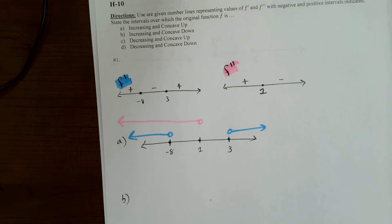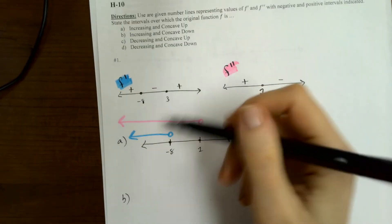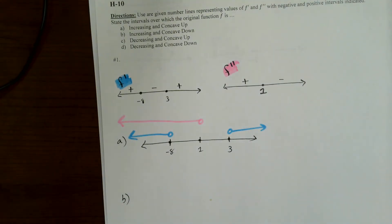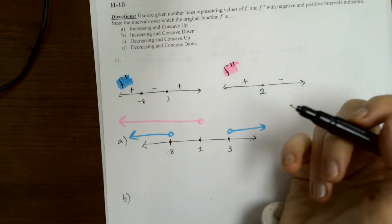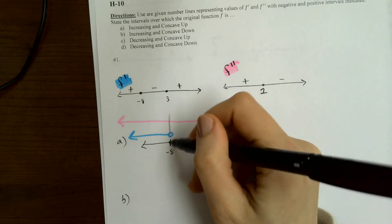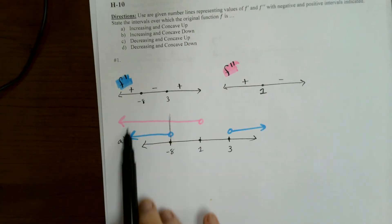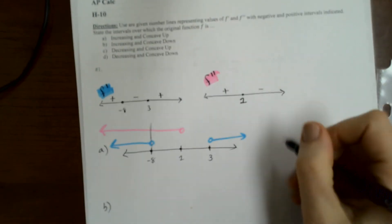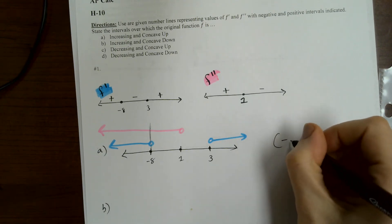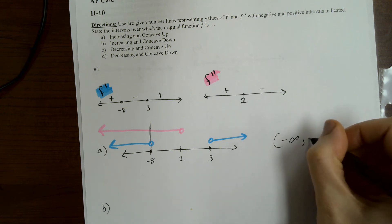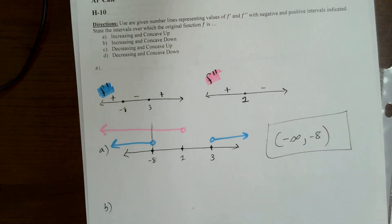And guys, you're looking for the overlap — where the pink and the blue overlap. Those are the intervals where F is both increasing and concave up. So here's our overlap over here. The answer is from negative infinity up to negative eight.